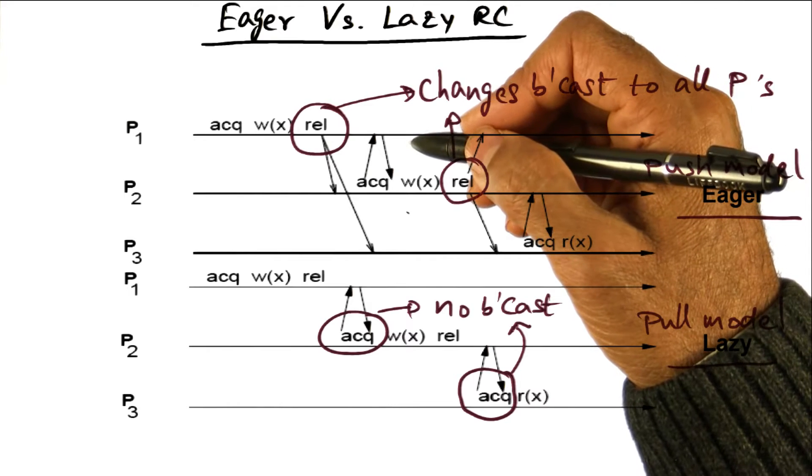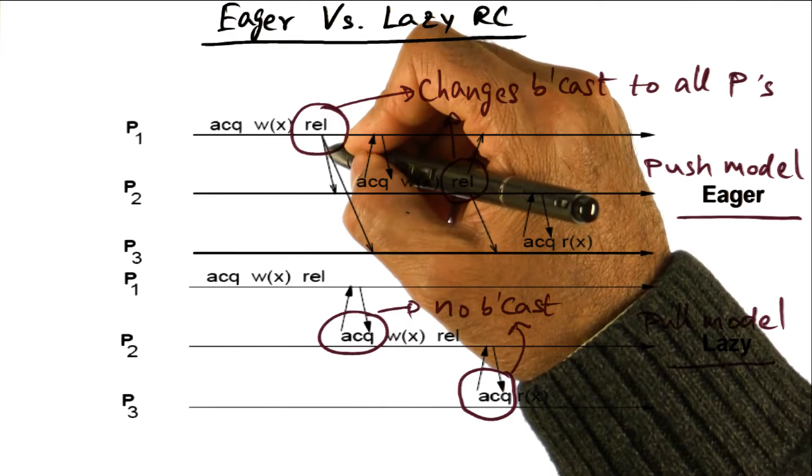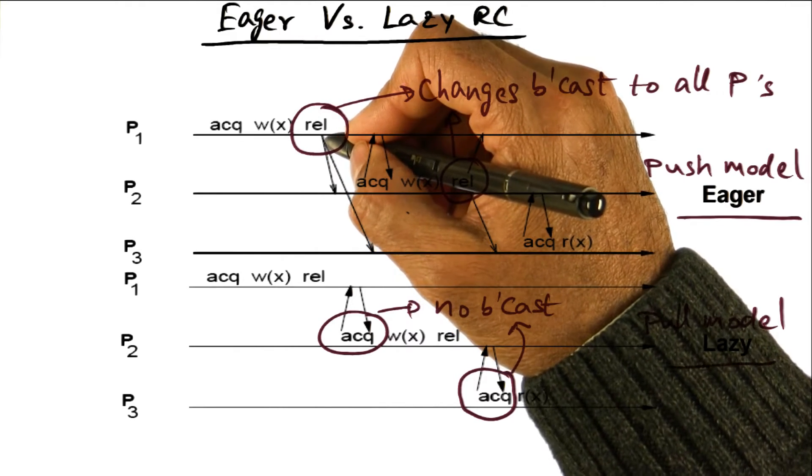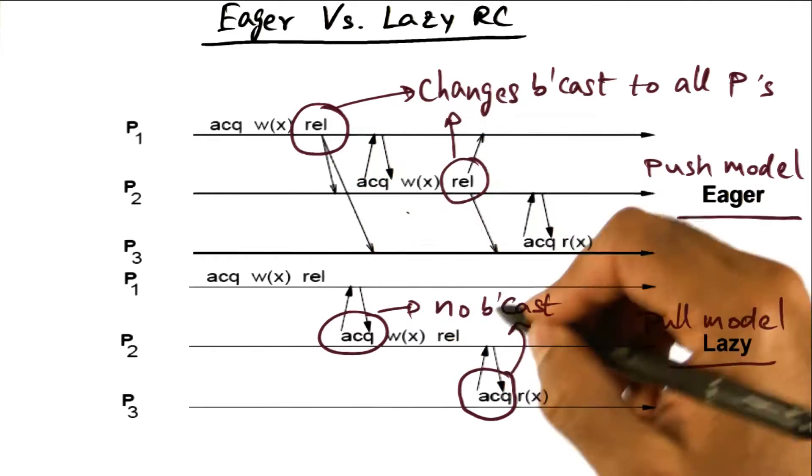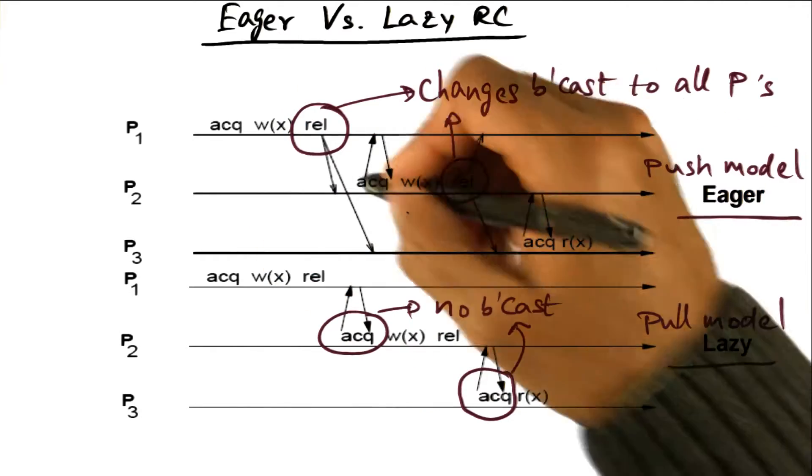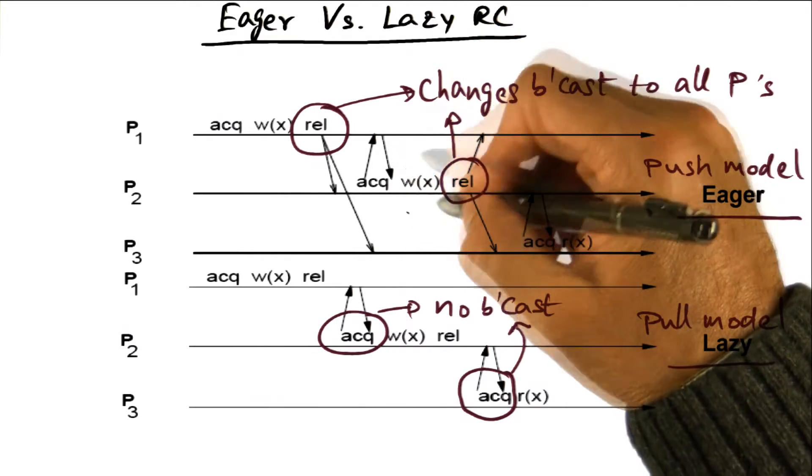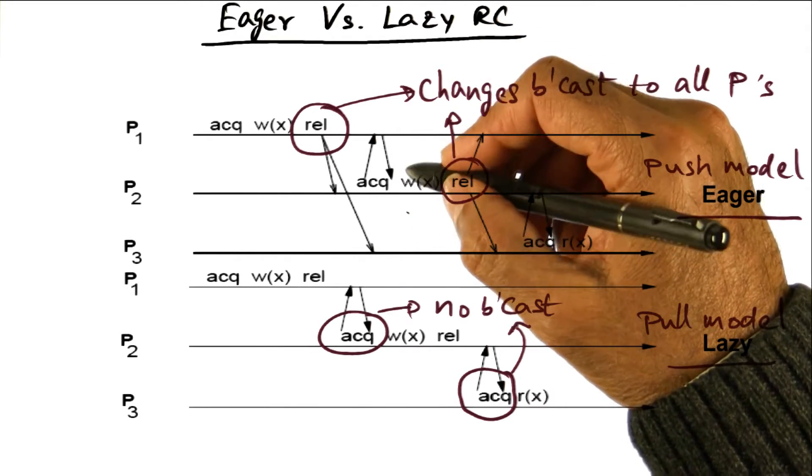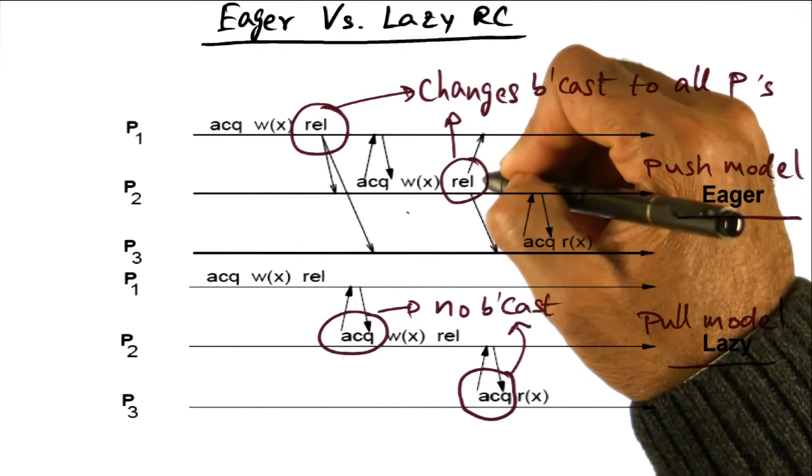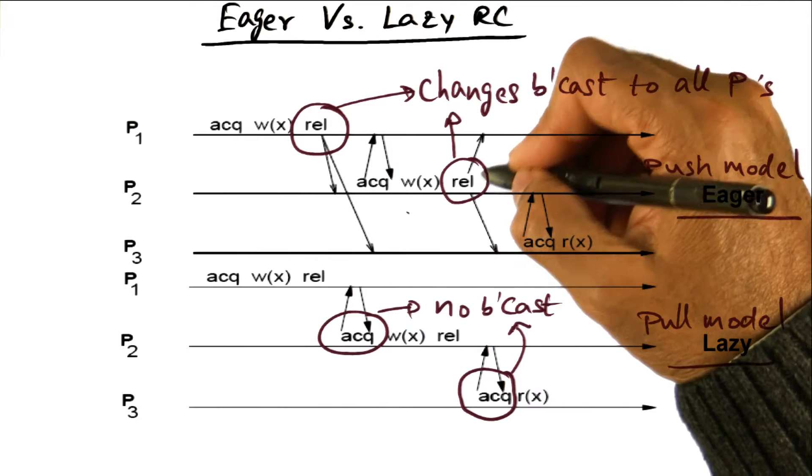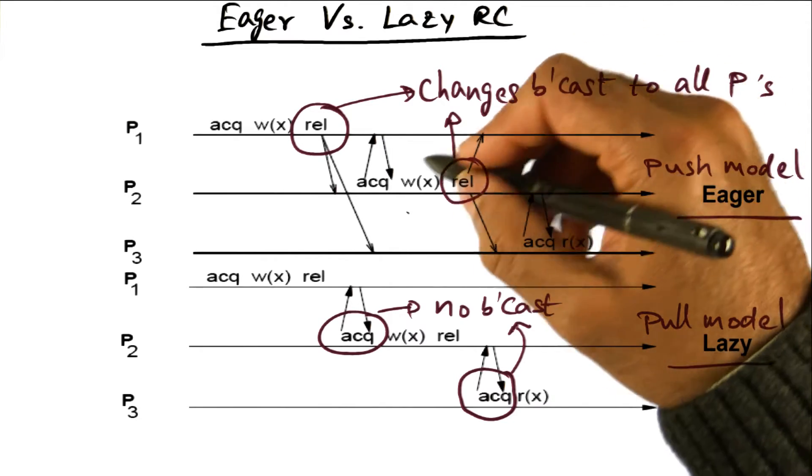It could be, depending on whether it is an invalidation based protocol or an update based protocol. What we are saying is we are communicating the coherence action to all the other processes. That's what these arrows are indicating. Now then P2 acquires the lock and after it acquires the lock, it does its own critical section. Again, let's say we are writing to the same variable x, and it releases the lock. And at the point of release, once again, we broadcast the changes that we made.